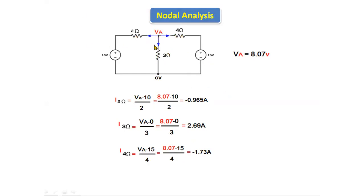If we know the currents, we can find the voltage across each resistor using V = I·R. Voltage across the 2 ohm resistor: V = −0.965 × 2. Voltage across the 3 ohm resistor: V = 2.69 × 3. Voltage across the 4 ohm resistor: V = −1.73 × 4. This is the procedure to find voltages across each resistor.